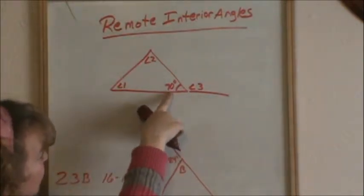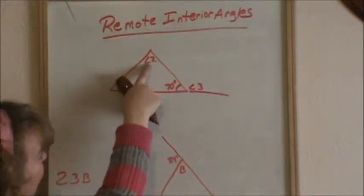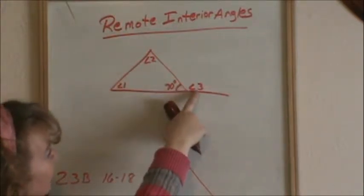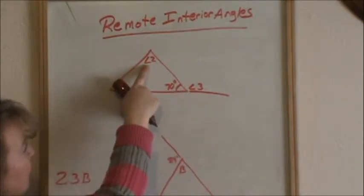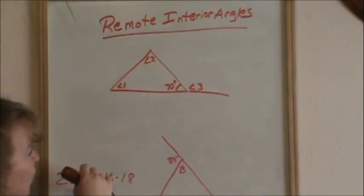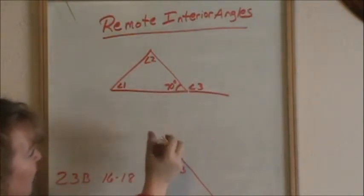Here I have this triangle, 70 degrees. This is labeled angle 1. This is angle 2. And we're going to call this exterior angle, angle 3. Angle 1 and angle 2 are interior angles. They are inside the triangle. Angle 3 is exterior. It is outside the triangle.